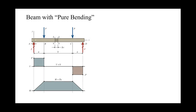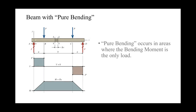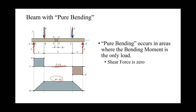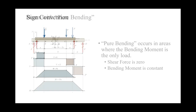In this beam we have an area of pure bending. Pure bending occurs in areas where bending moment is the only load. So between our two point loads we have no shear force and only a bending moment — our shear force is zero and our bending moment is constant.